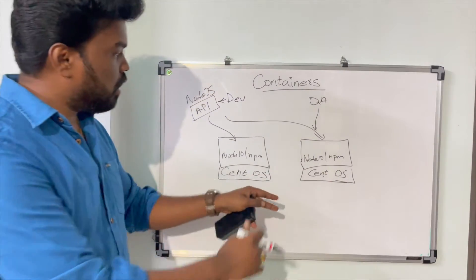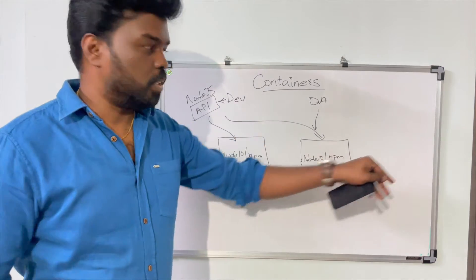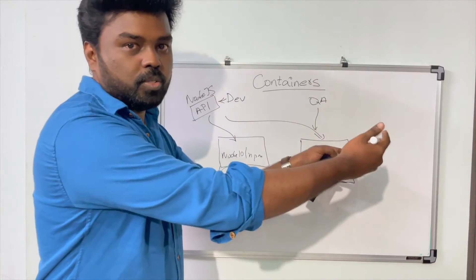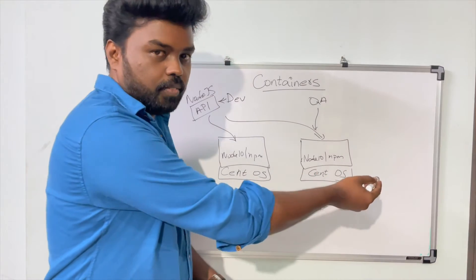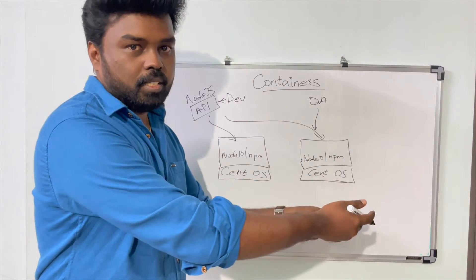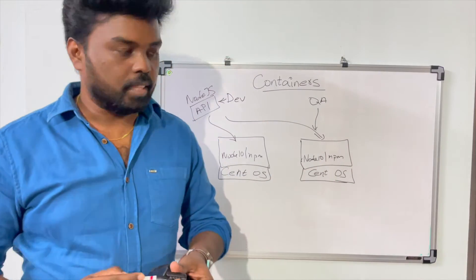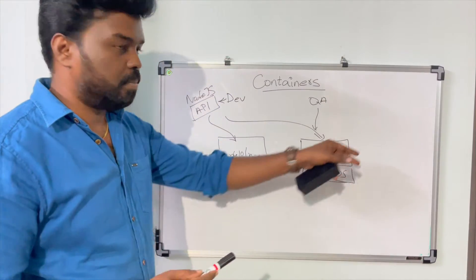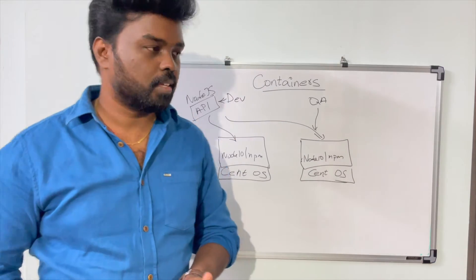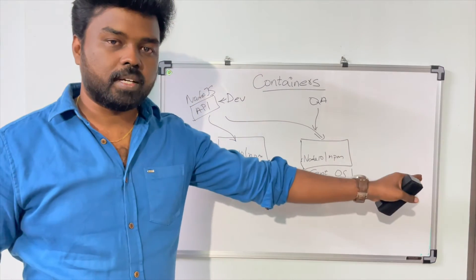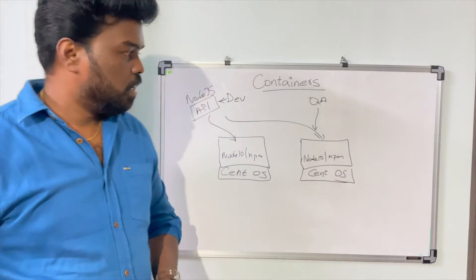Similarly, we might need one more environment for the end users to reach the application. So you create a similar kind of server, install the operating system, the Node runtime, and the NPM dependencies, and then deploy the application on that server so that end users can reach it. Now all the environments are up and running and the application is also running, which is fine.